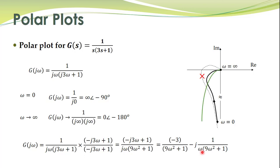And to determine the crossing on the imaginary axis and on the real axis, we can substitute the real part to be equal to 0. And likewise, the imaginary part to be equal to 0.